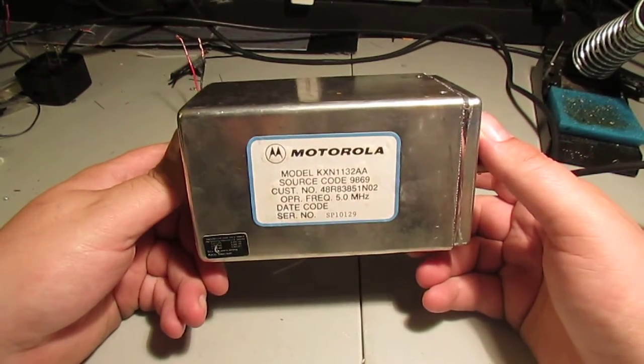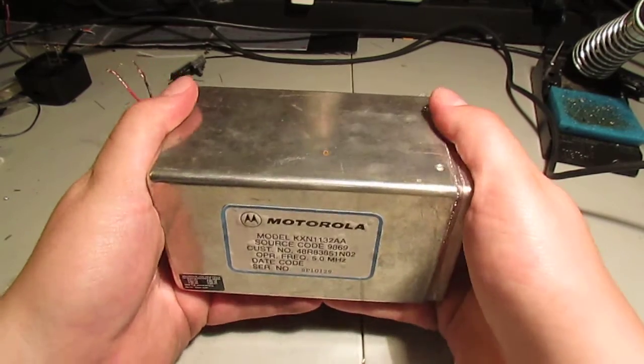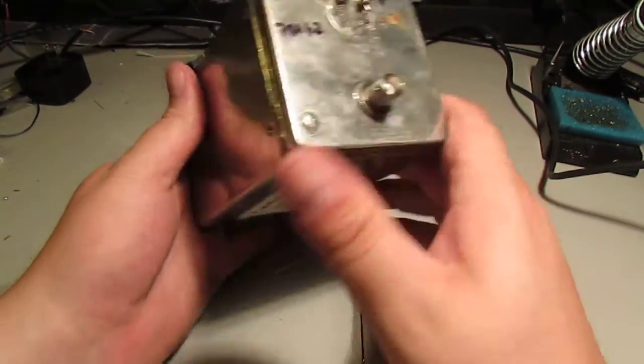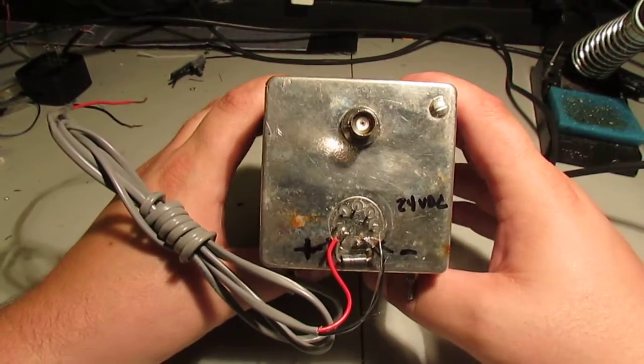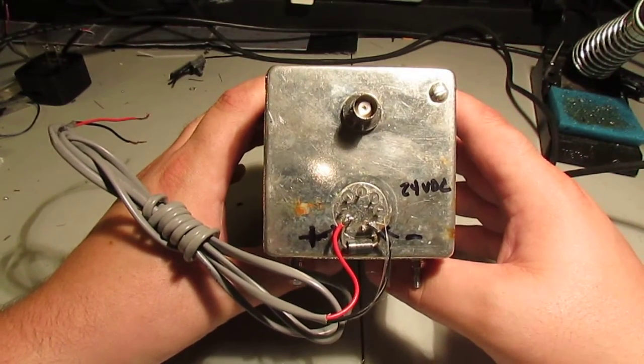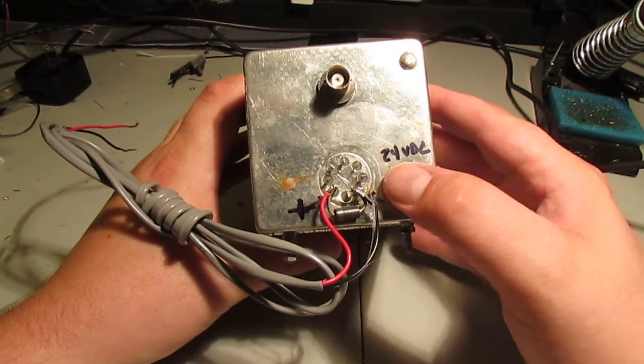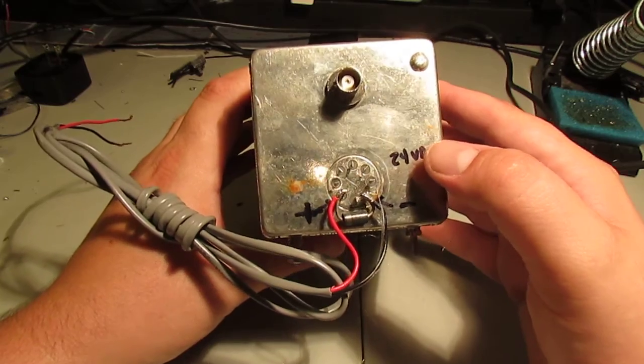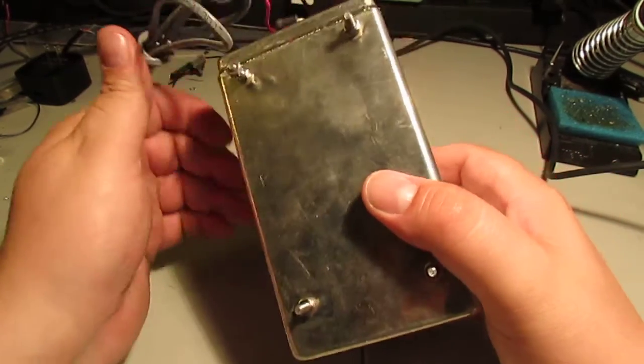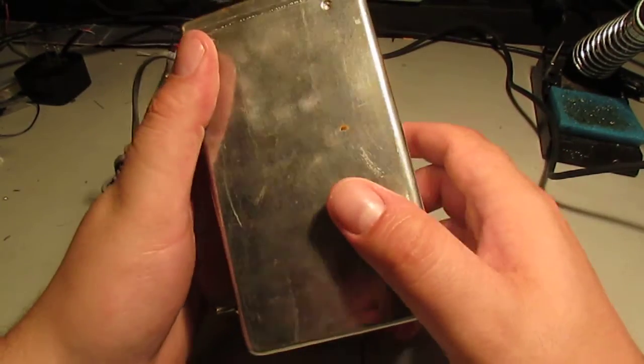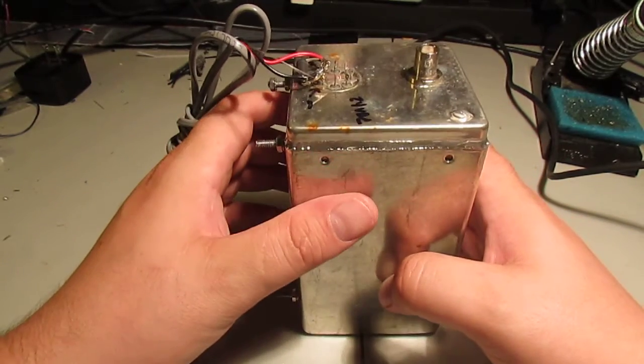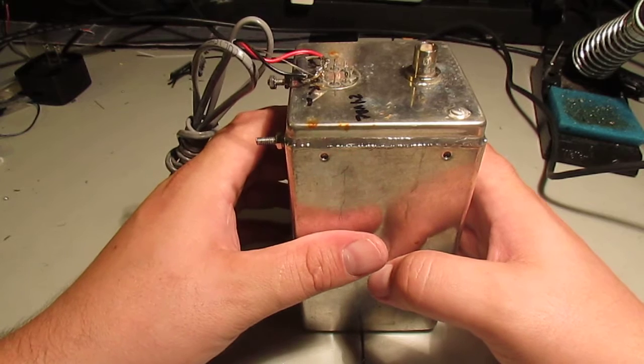So it's a fairly large unit. You can tell just by how big it is compared to my hands. It's got a convenient BNC connector on it. And they run off of, as I have marked here, this one runs off of 24 volts. The case gets rather warm, as you would expect, on an oven controlled oscillator. And it was originally mounted inside a MyCore paging station.